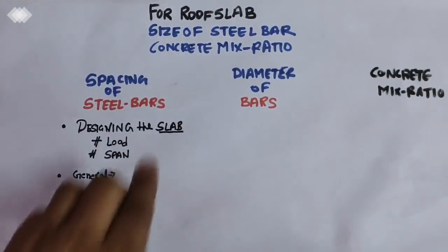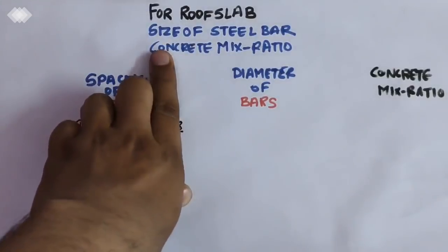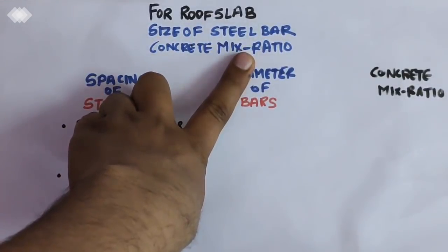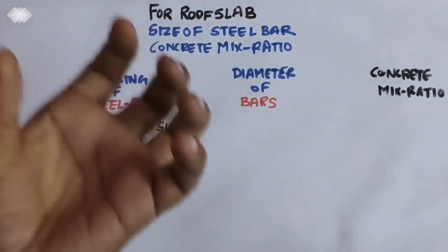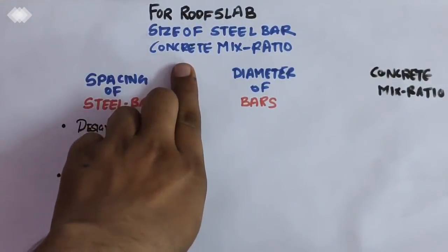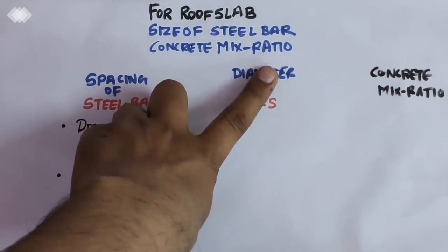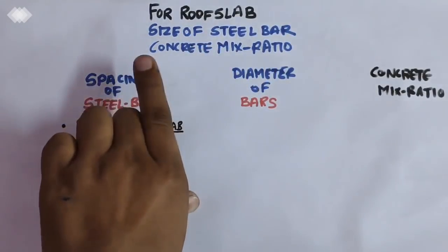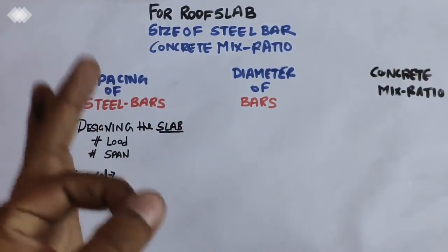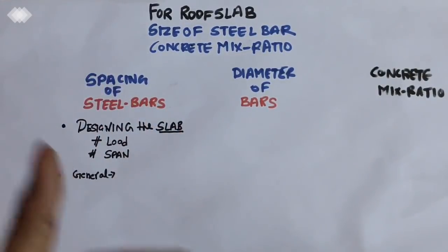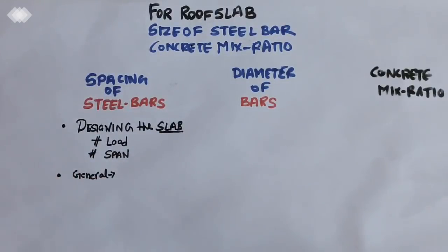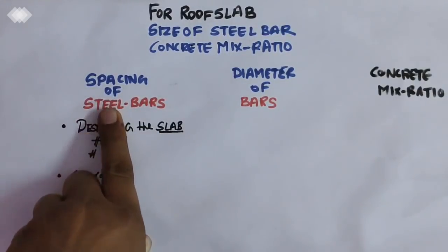In today's topic, we will discuss the roof slab: the size of steel bars, the concrete mix ratio, and the spacing of steel bars. There are three important factors when going for the casting of a roof slab for a building.